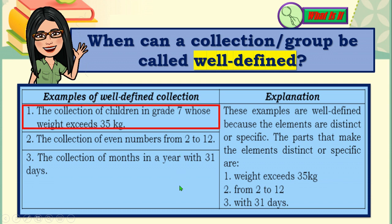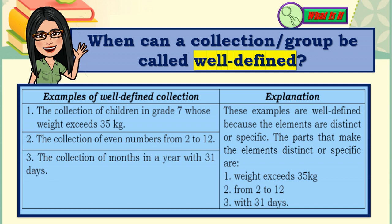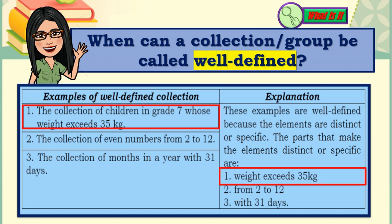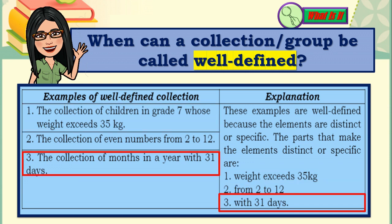The collection of children in grade 7 whose weight exceeds 35 kilograms. The collection of even numbers from 2 to 12. The collection of months in a year with 31 days. These examples are well-defined because the elements are distinct or specific. The parts that make the elements distinct are: for number 1, 'weight exceeds 35 kilograms'; for number 2, 'from 2 to 12'; and for number 3, 'with 31 days'.